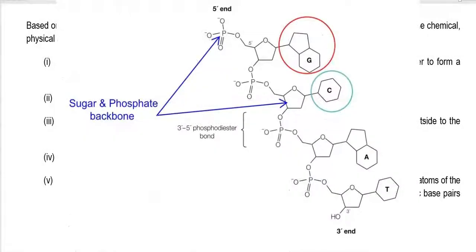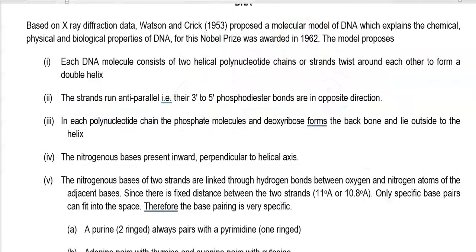In each polynucleotide chain, the phosphate molecules and deoxyribose sugars form the backbone and lie outside the helix. However, the nitrogenous bases — adenine, guanine, thymine, and cytosine — are present inward, perpendicular to the helical axis of the DNA molecule.